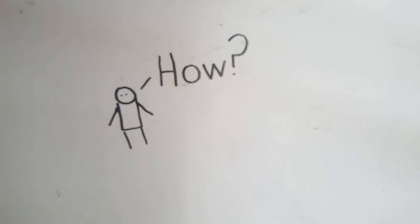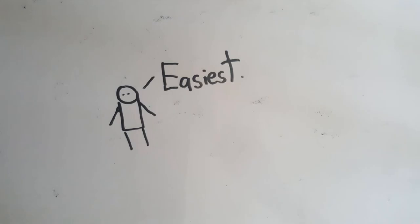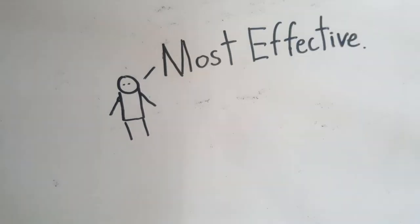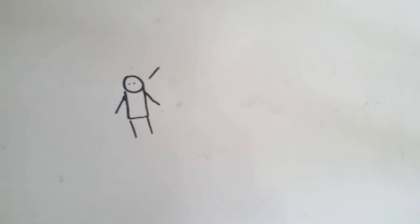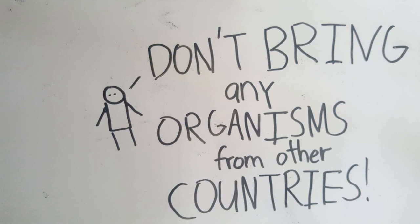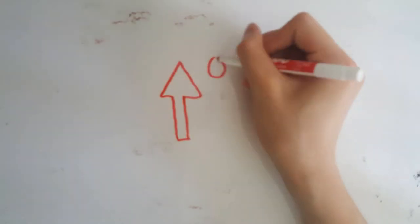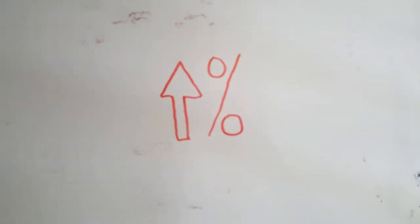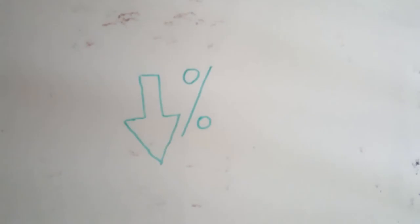Okay, so how can people control an invasive species? The easiest, most obvious, most effective way to control an invasive species is do not bring any organisms from other countries. Bringing in other organisms, the chance of an invasive species taking over an ecosystem is greatly increased. So by not bringing in other organisms, that chance will be considerably lower.